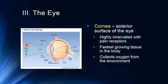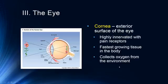The first structure is the cornea — the exterior surface of the eye. It is highly innervated with pain receptors, which is why scratching or getting something in your eye is so painful. It's also one of the fastest growing tissues in the body. Importantly, the cornea has no blood supply and collects oxygen from the environment. Contact lenses block that oxygen collection, which is why doctors encourage you not to wear contacts all the time. Toric lenses for astigmatism can be particularly problematic because cells at the bottom of the cornea may start growing outward trying to reach oxygen.